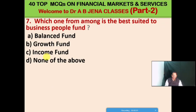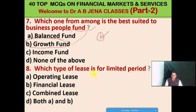Next MCQ: which one from the following is the best fund suited to business people? A: balance fund, B: growth fund, C: income fund, D: none of the above. C, the growth fund, is the right option. Next MCQ: which type of lease is for a limited period? A: operating lease, B: financial lease, C: combined lease, D: both A and B. A is the right option — operating lease is for a limited or short period.